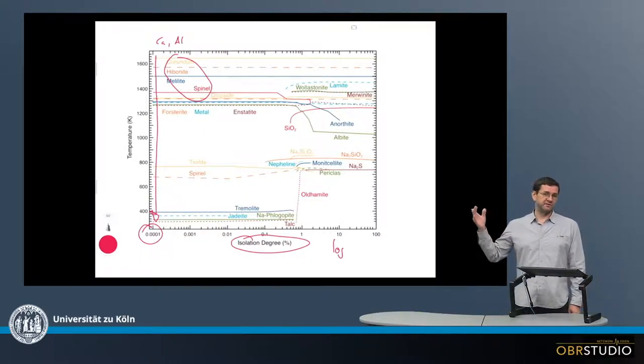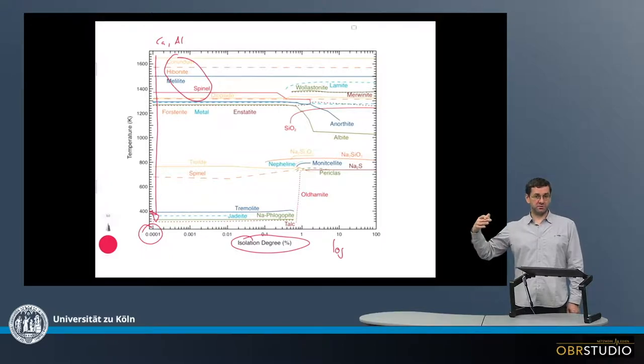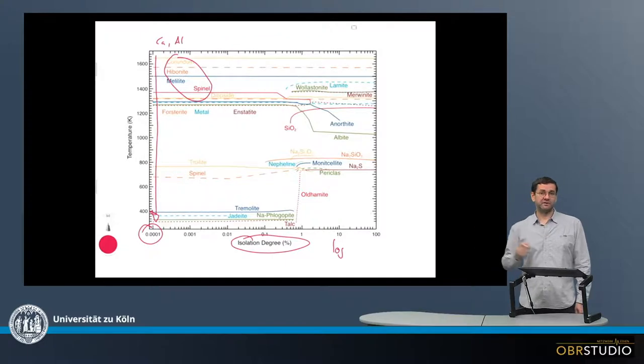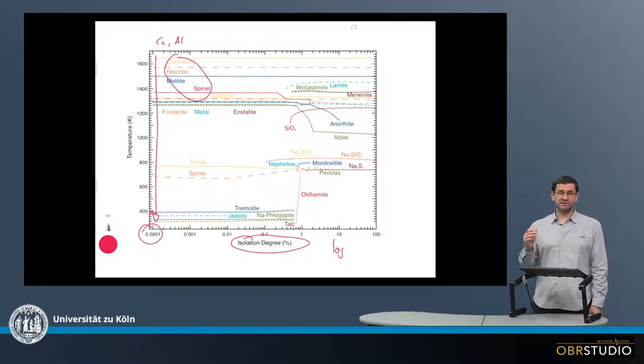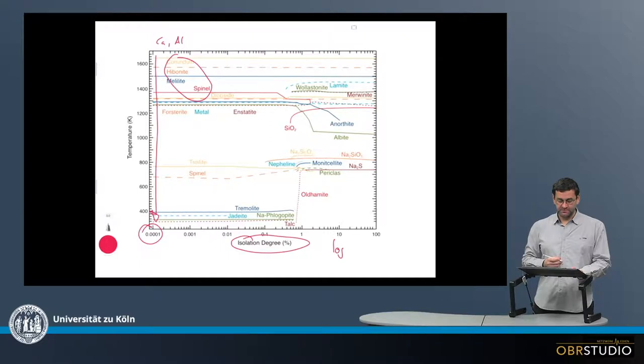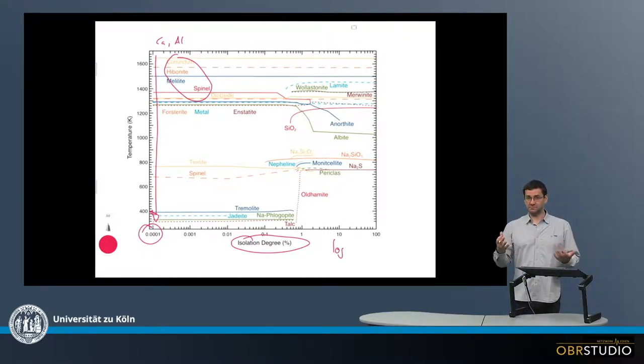But the amount of these minerals is comparatively small as the elements, calcium-aluminum refractories, have about an order of magnitude lower abundance as magnesium, silicon, and iron. So after this condense, then the main elements and the corresponding minerals start to condense.